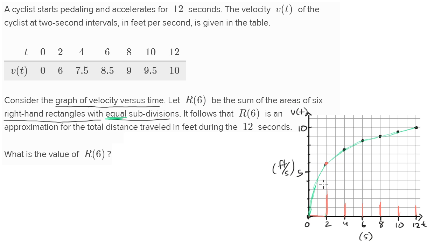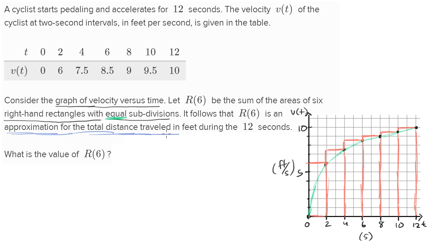Let me clear this a little bit. So this is our first right-handed rectangle, this is our second one — let me just draw the tops. Third, fourth, fifth, and sixth. Those are the tops of them, and they look something like this. Capital R of six is the sum of the areas of these rectangles, and it follows that capital R of six is an approximation for the total distance traveled in feet during the 12 seconds.